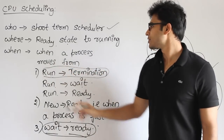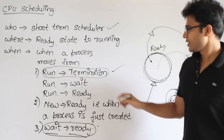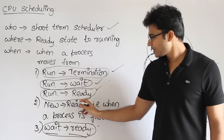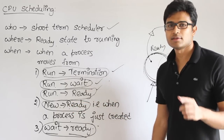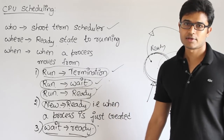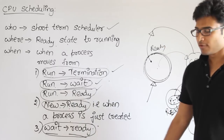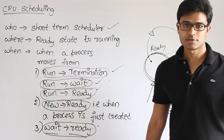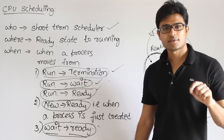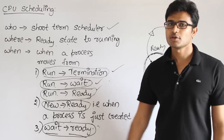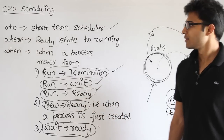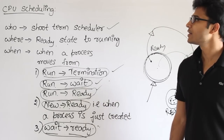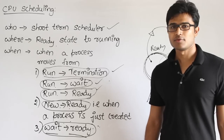To summarize: whenever a process moves running to termination or running to wait, we must schedule because the CPU is idle. For running to ready, scheduling is required. For new to ready or wait to ready, scheduling happens only if the new process has higher priority than the currently running one. CPU scheduling algorithms can be classified into two types: preemptive and non-preemptive.